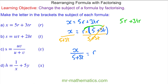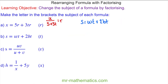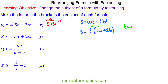Let's move on to question b. In question b we're going to make t the subject, which means we need to factorise the right hand side for t. We have one t term, so s is equal to t lots of w plus 2b, and when we factorise this out we get the expression we started with.